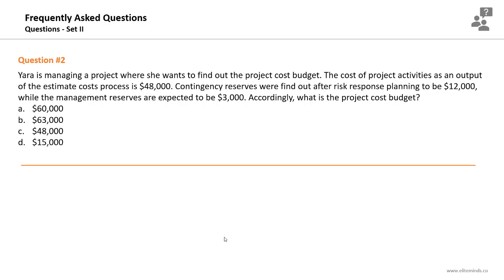You just need to understand the difference between the project budget and the cost baseline. The difference is the management reserves. Since the question asks about the project cost budget, we add the activity cost estimates of $48,000 to the contingency reserves of $12,000 to the management reserves of $3,000, giving $63,000 USD.